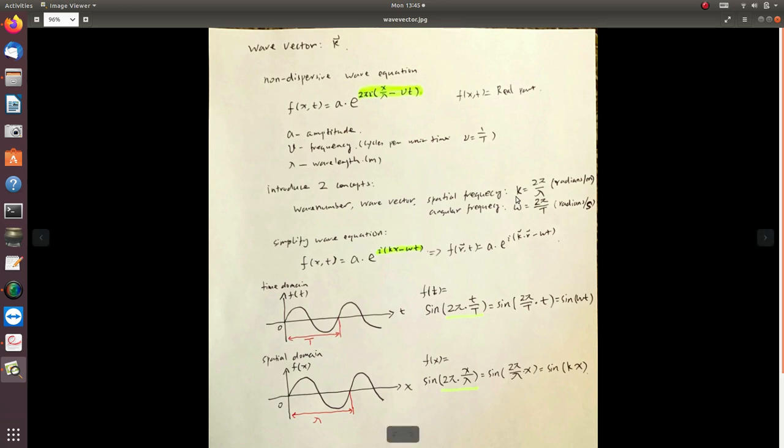So the wave number k is 2 pi divided by lambda in the unit of radians per millimeter. And another concept is angular frequency. Omega equals 2 pi divided by the period in the unit of radians per second. If we use these two denotations, then we can simplify the wave equation in this form. So it's very simple.